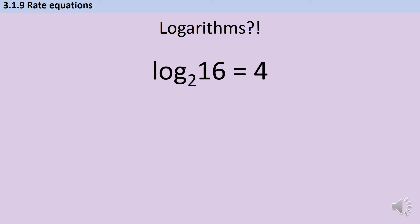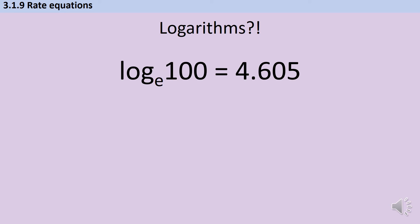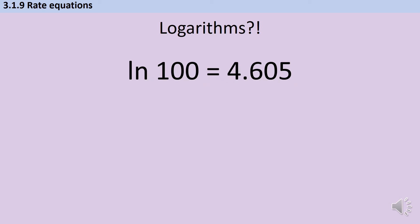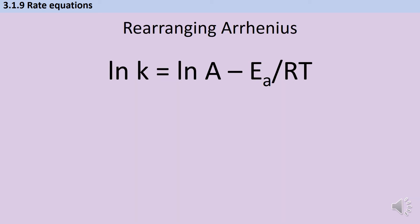For example, log base 2 of 16 is 4, which tells me that 2 to the power of 4 equals 16. Then we have our friend E. Log base E of 100 is 4.605, which means E to the power of 4.605 equals 100. Because E is so important, the logarithm with base E gets its own special name — the natural logarithm — and you use the LN button on your calculator. That means exactly the same thing as log with base E.